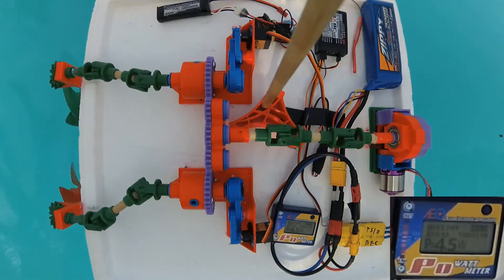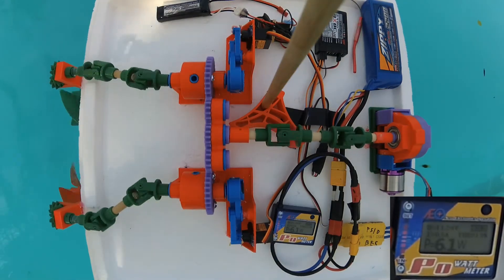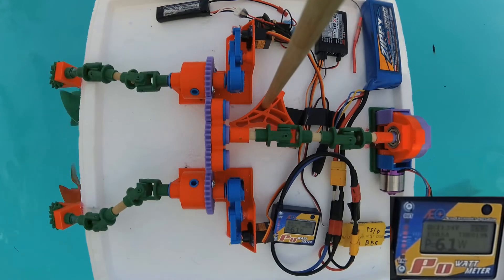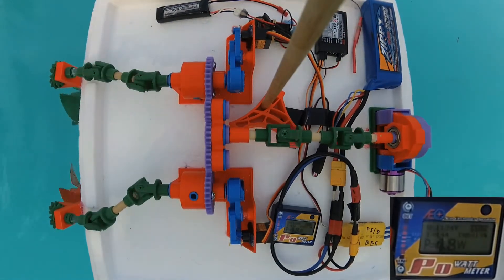So to find where the slippage was occurring, I first manually locked up the differential brakes so they were unable to rotate. Doing this cost us the ability to turn the craft, but it drastically changed the propulsion performance as well as the power draw.